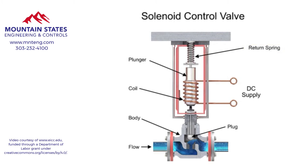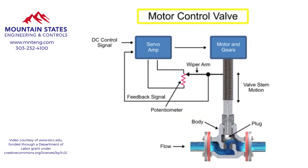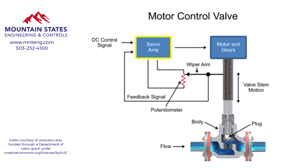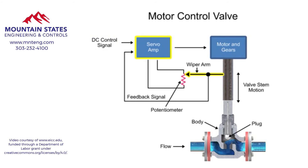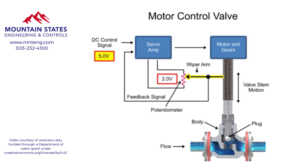Another method for variable valve positioning uses a motor and is referred to as proportional control mode. Using a gear motor attached to the valve stem, a servo amplifier provides a DC control signal that moves the valve to the desired position. Feedback is achieved with a wiper arm attached to the valve stem that sends a signal back to the servo amplifier where the position is monitored. The servo amplifier drives the motor until the control signal is equal to the feedback signal.